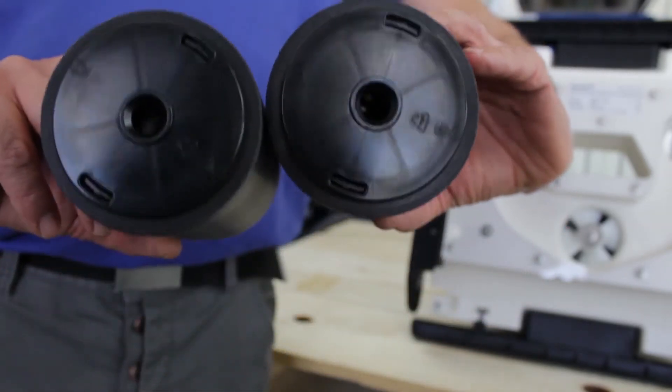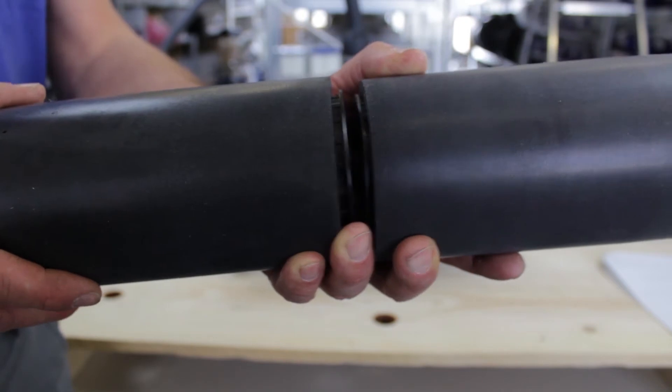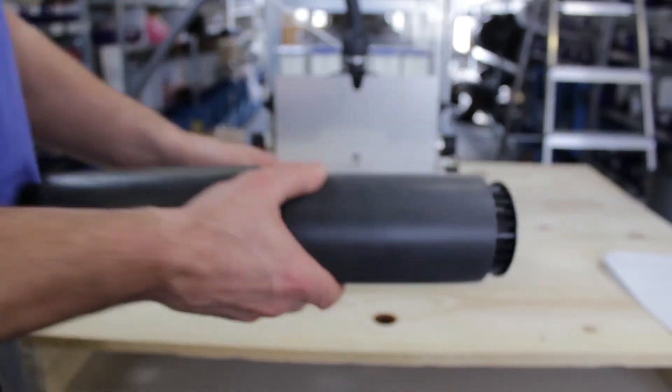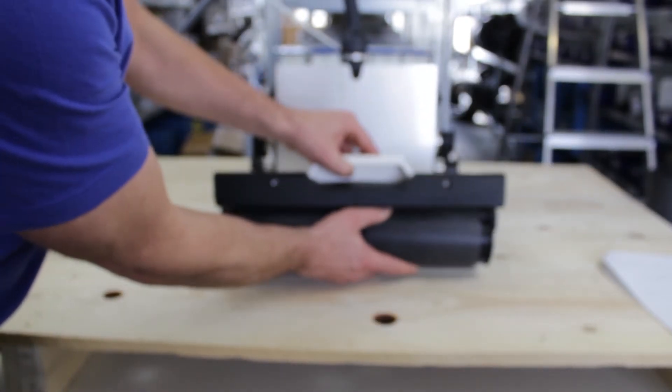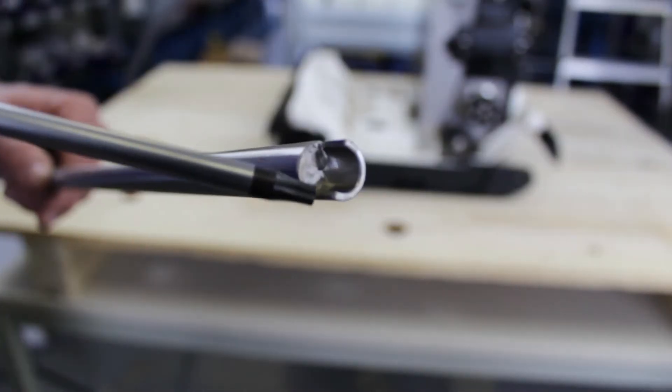When everything is clean we can put the rollers back in. The flat sides face inwards. Next we push the axle back into the shaft to fix the rollers.